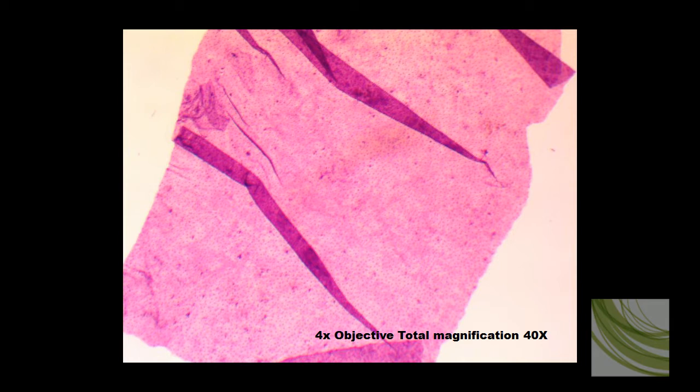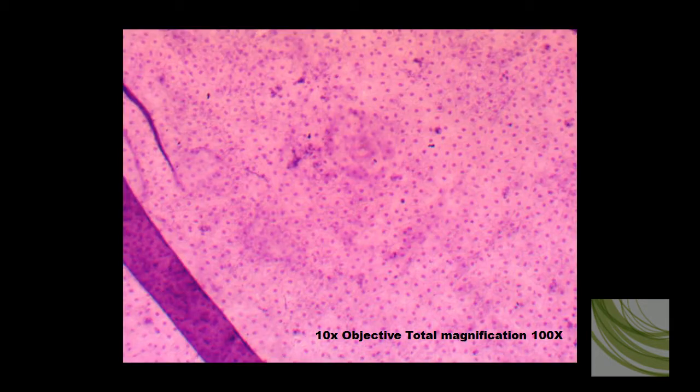This is frog skin, so that we can get a top-down view of a single layer of squamous epithelial tissue. This is using the 4x objective for a total magnification of 40 times. You can't see a lot at the 4x, but when we take it to the 10x objective, now we can start seeing the various cells.